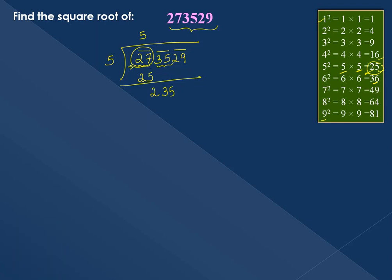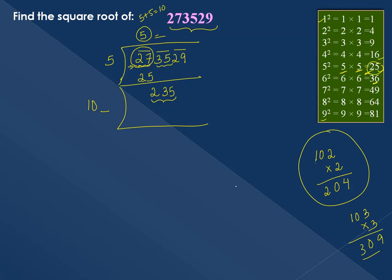For the dividend 235, we now find the divisor. We take the quotient and double it: 5 plus 5 equals 10. Write 10 on the right side with a blank space. The number we need for the quotient and to multiply: trying 2, we get 102 multiplied by 2 equals 204. Since 204 is less than 235, the next digit is 2.